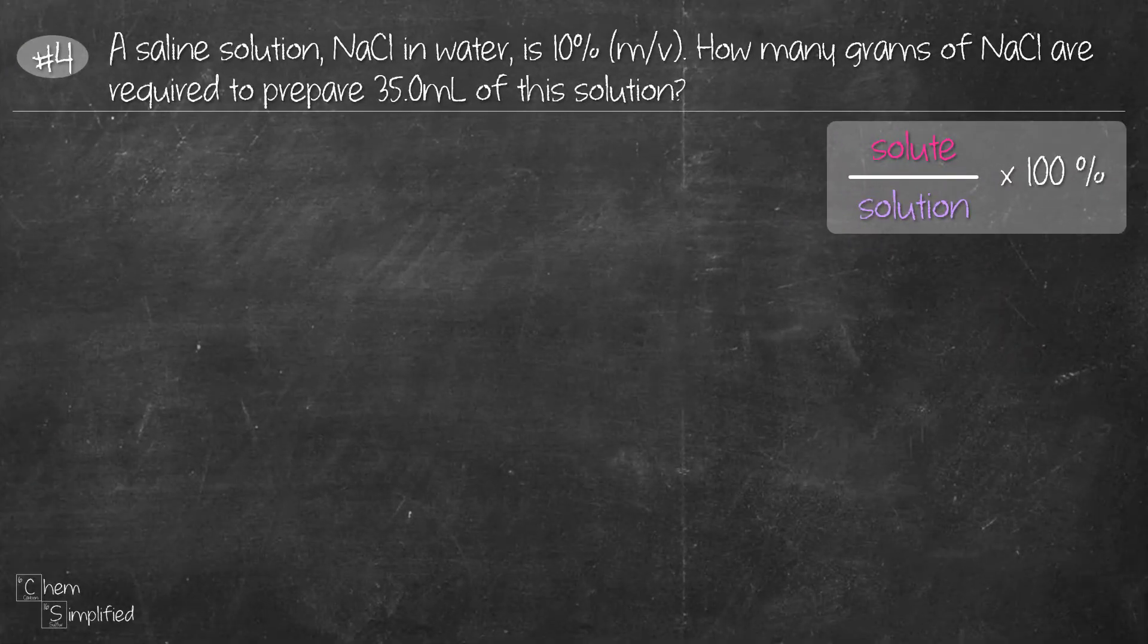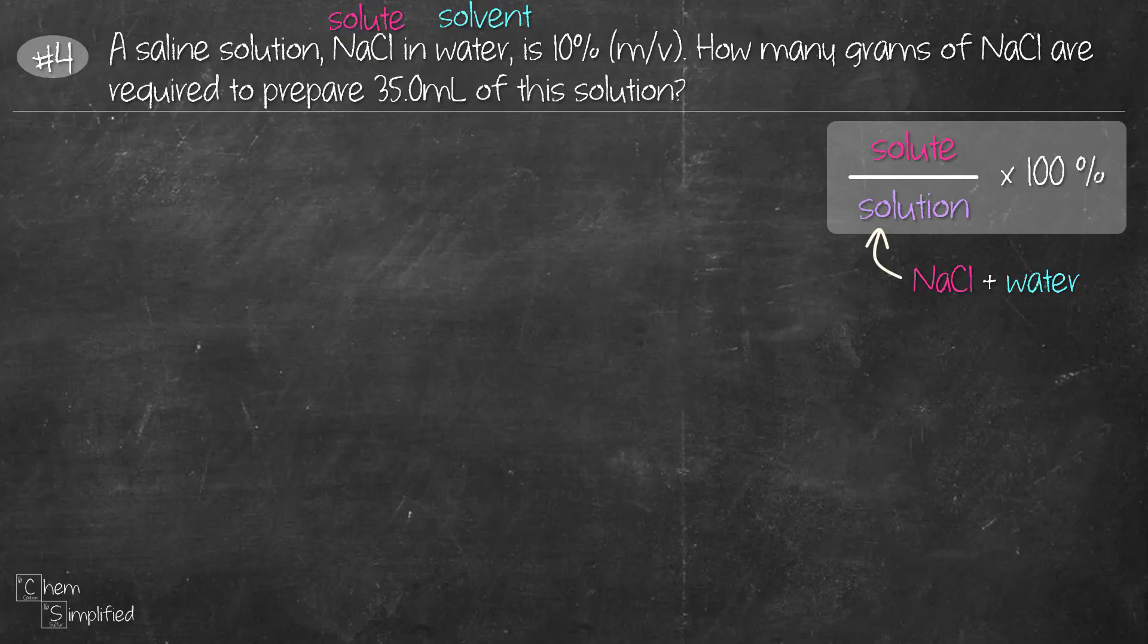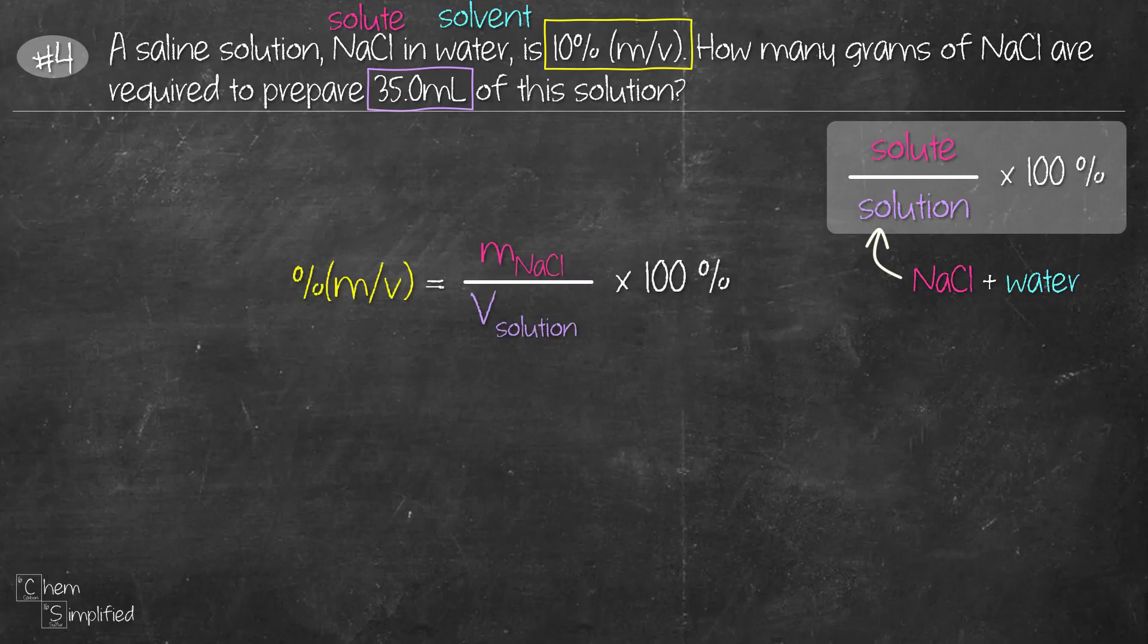Now notice this question, we have NaCl in water. Which is the solute and which is the solvent? Yeah, you got it. NaCl is the solute and water is the solvent and together they form the saline solution. So we're given 10 percent mass over volume and we are asked to find the grams of NaCl to prepare 35 ml of solution. So let's start with the formula. Notice that it's mass over volume.